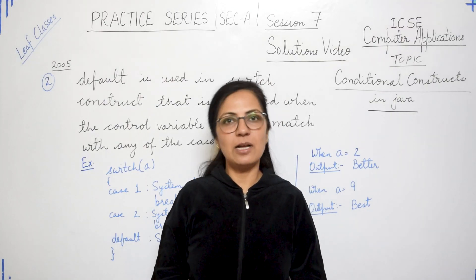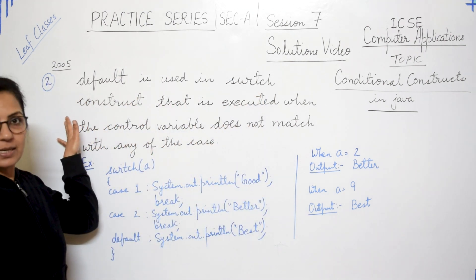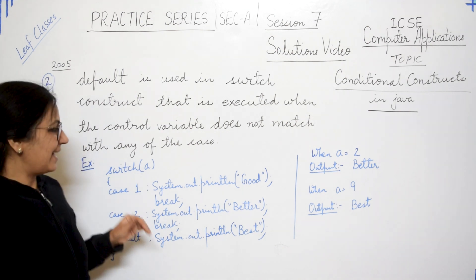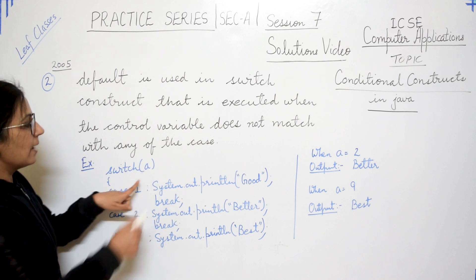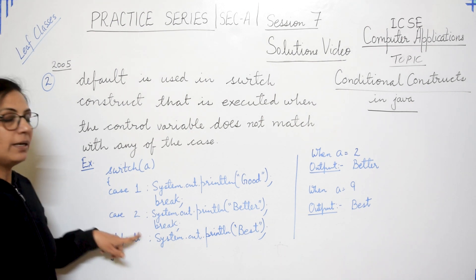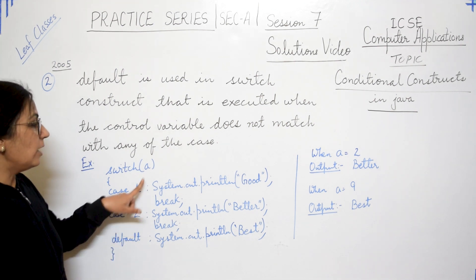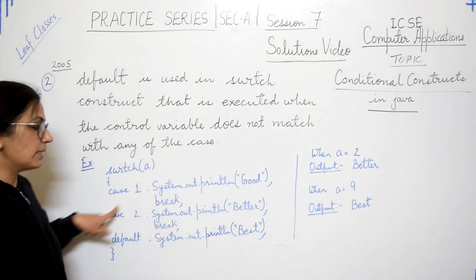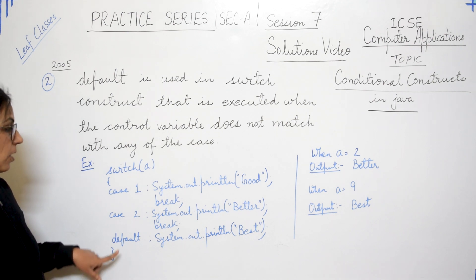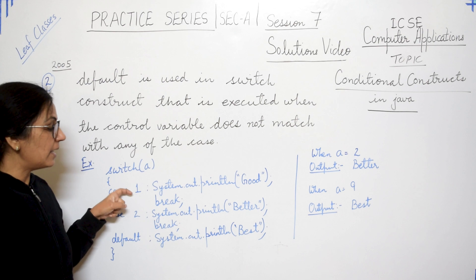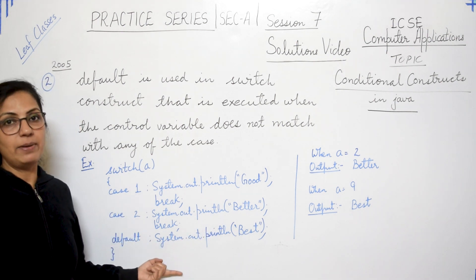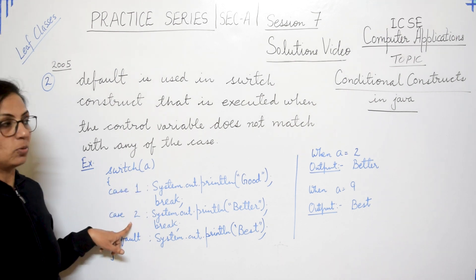Question 2: the purpose of the default statement with an example. Default is used in the switch construct and is executed when the control variable does not match any of the given case values. In the example: switch(a) — 'a' is the control variable — we have case 1, case 2, and a default case. If the value of 'a' is 1, it displays 'good' and break exits the switch block. If 'a' is 2, it displays 'better'.